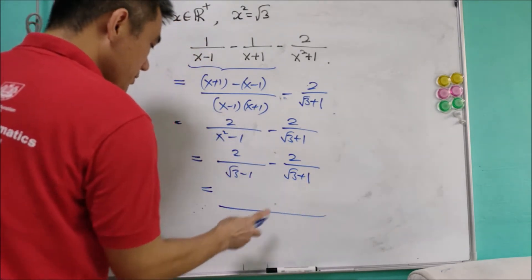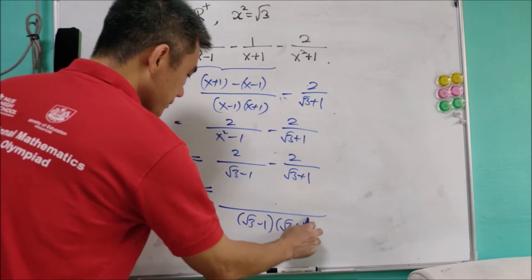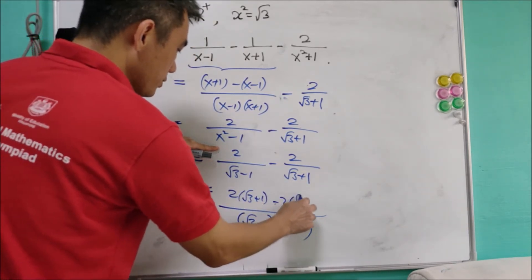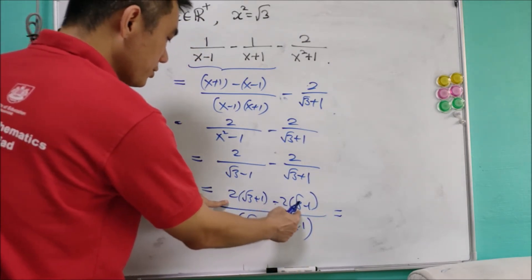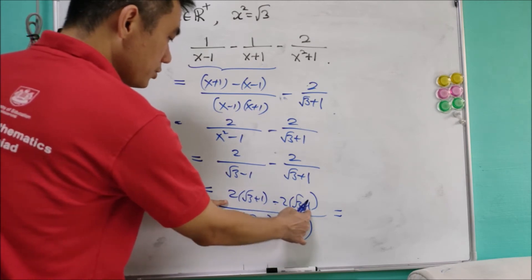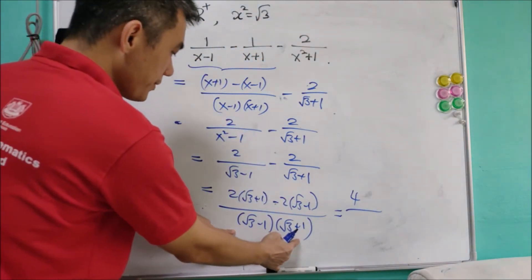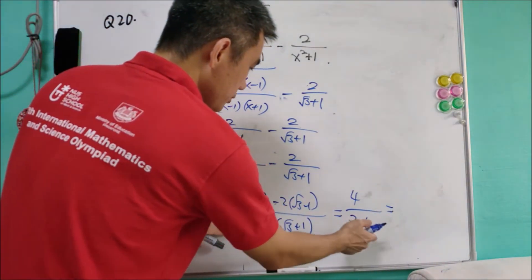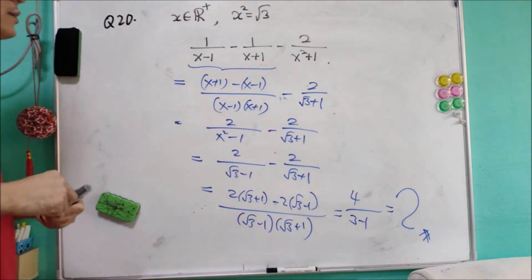Combining them, we have (√3 minus 1)(√3 plus 1) in the denominator, and the numerator becomes 2 times (√3 plus 1) minus 2 times (√3 minus 1). The 2√3 terms cancel off, leaving 2 minus (negative 2) equals 4. The denominator is a difference of squares: 3 minus 1 equals 2. So 4 over 2 equals 2, and the answer is 2.